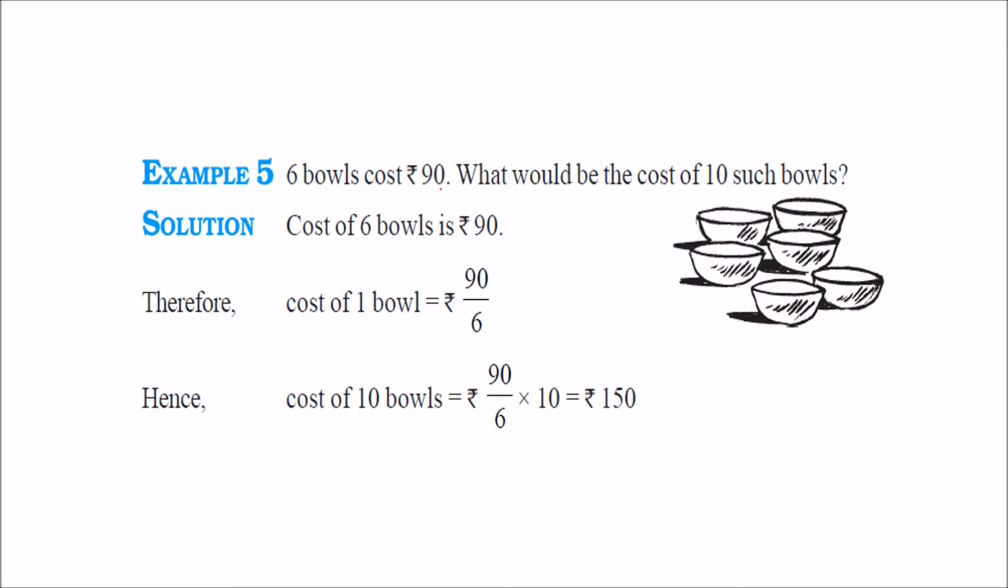6 balls cost 90. What would be the cost of 10 such balls? So 6 balls cost 90. One ball will cost what? 90 by 6. And if you have to find 10 balls, just multiply it by 10. If you want to find out for 20 balls, multiplied by 20. So this is the unit cost for one value and you can multiply it with the number of times. So this is how 10 balls will come 150.